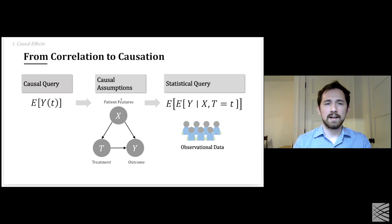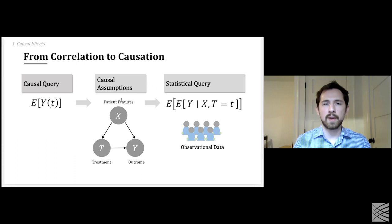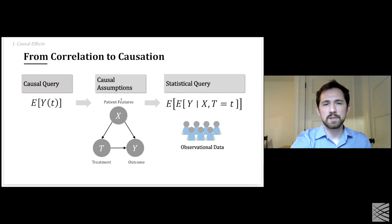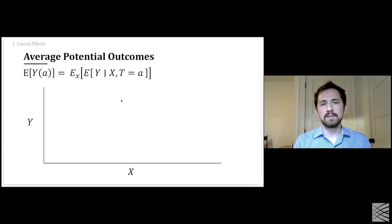These assumptions allow us to take what is a causal query and transmute it through our causal assumptions into a statistical query — something we can actually evaluate on our observational dataset. If our causal assumptions are wrong, then this statistical query might not map to what we hope it does, but for our purposes we'll assume causal assumptions are correct.